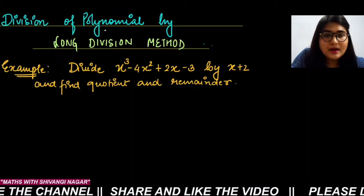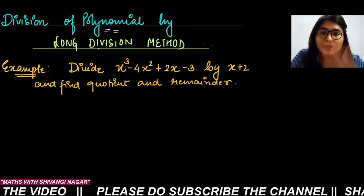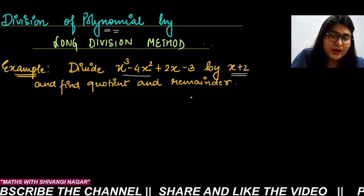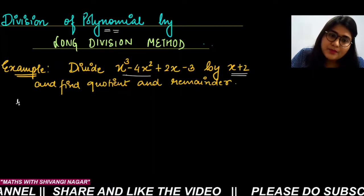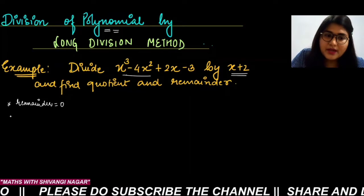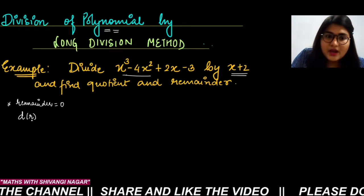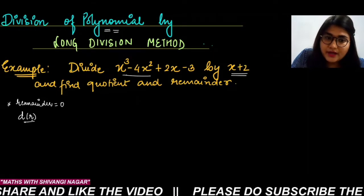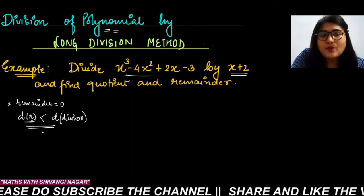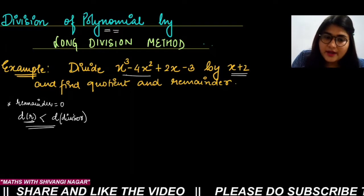What we have to follow here, since we are talking about polynomials. In polynomials, what do you have to do — divide one polynomial by another polynomial. We have to divide this cubic polynomial by this linear polynomial. When we perform division, condition one: if remainder is 0 then stop. The second condition: if the degree of remainder — D denotes degree, R stands for remainder — if degree of remainder is less than the degree of the divisor, then stop.